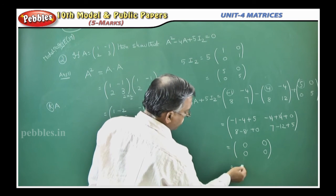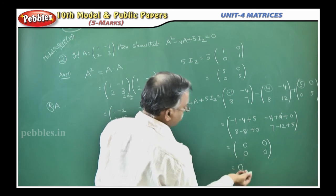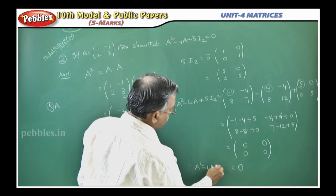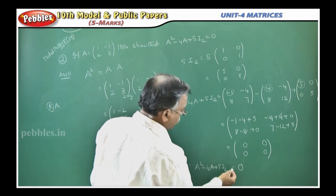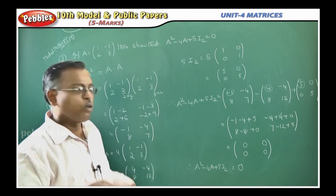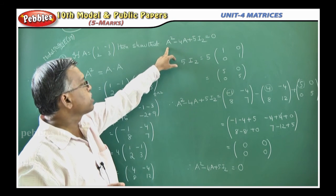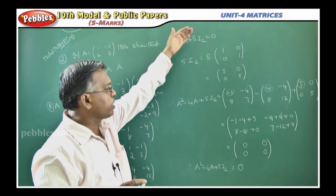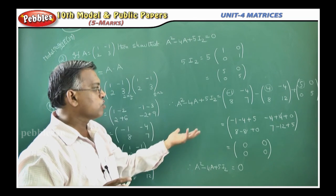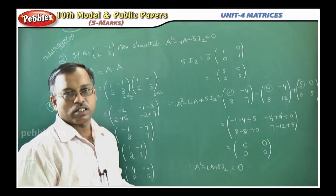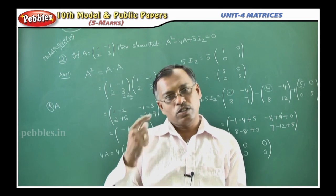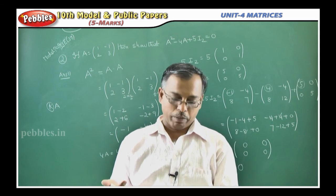That is equal to 0 matrix or 0 you can put, that does not matter. Therefore, A square minus 4A plus 5I2 is equal to 0. That much simple this is. Only thing is separately, you find A square minus 4A plus 5I2, then add all the matrices, then you simplify, automatically you will get the answer. We will see the next problem based on this unit. We will see the third model paper now.